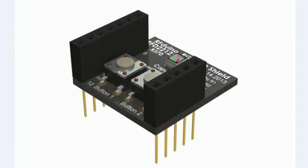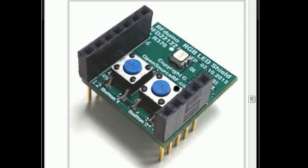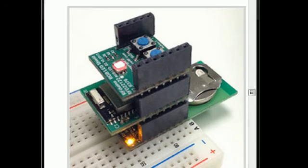Here is a 3D picture of the shield. The shield plugs directly onto the top of the RFduino. Here is a picture of the shield itself, which is our prototype, and also a picture of it plugged onto the RFduino along with a CR2032 battery and a solderless breadboard.